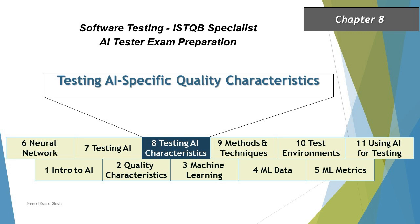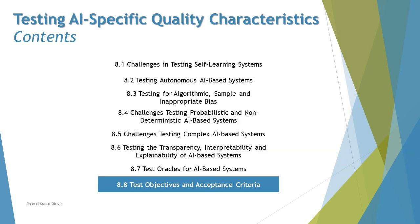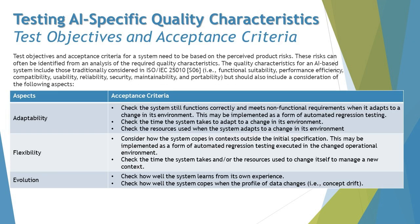Hello friends, greetings for the day, and welcome back to another tutorial on the ISTQB AI Tester certification. We are in Chapter 8, talking about testing AI-specific quality characteristics, moving on to the last topic of this chapter: Section 8.8, Test Objectives and Acceptance Criteria. We have been discussing how test objectives and acceptance criteria can be defined for AI-based systems right from Chapter 1, and finally in Chapter 8 we are covering it with some good examples.